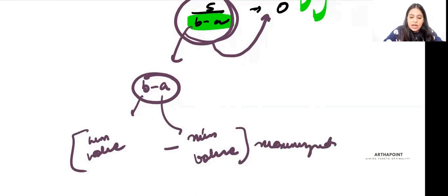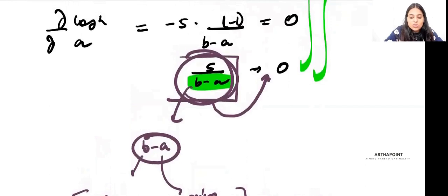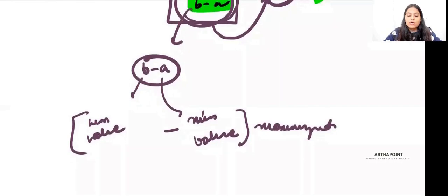Is this clear? I want to make this closer to 0, so the denominator should be as big as possible. To make the denominator as big as possible, I want to maximize the gap between B and A.